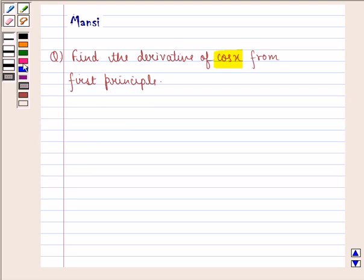So let us start with the solution to this question. First of all, f(x) given to us is cos x. So function at x+h will be cos(x+h).